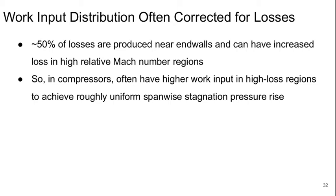But in real machines there are losses and the losses tend not to be uniform radially. So the work input distribution is often corrected to account for the losses. About half of the total loss happens near the end walls, the hub and the casing, and you can also have even higher loss near the tip in higher relative Mach number regions. So in compressors we often have higher work input in these high loss regions at the hub and the tip to be able to achieve a roughly uniform spanwise stagnation pressure rise. And that's important in order to help maintain a uniform axial velocity across the span, which is typically what we're designing for.